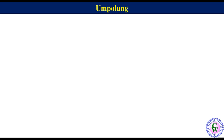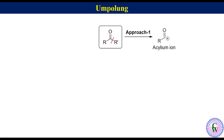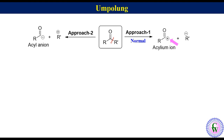Now for better understanding of umpolung, let's go through the retrosynthetic analysis of a few molecules. Suppose we have to make a target ketone. In the first approach, we can cleave a bond to get an acylium ion and carbanion as synthons. In the second approach, cleavage of the same bond gives an acyl anion and carbocation. The acylium ion has positive polarity on the carbonyl carbon, which is natural, so the first approach is the normal approach. On the other hand, the acyl anion has negative polarity on the carbonyl carbon, which is the reverse of normal polarity, so the second approach is called the umpolung approach.